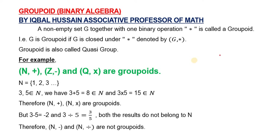Bismillah al-Rahman al-Rahim. This is G star, which represents a groupoid. By the groupoid, we mean that there will be a non-empty set G and a binary operation star. If we take any two elements from set G and combine them using star, and if the value belongs to G, then this set G together with binary operation is called a groupoid.